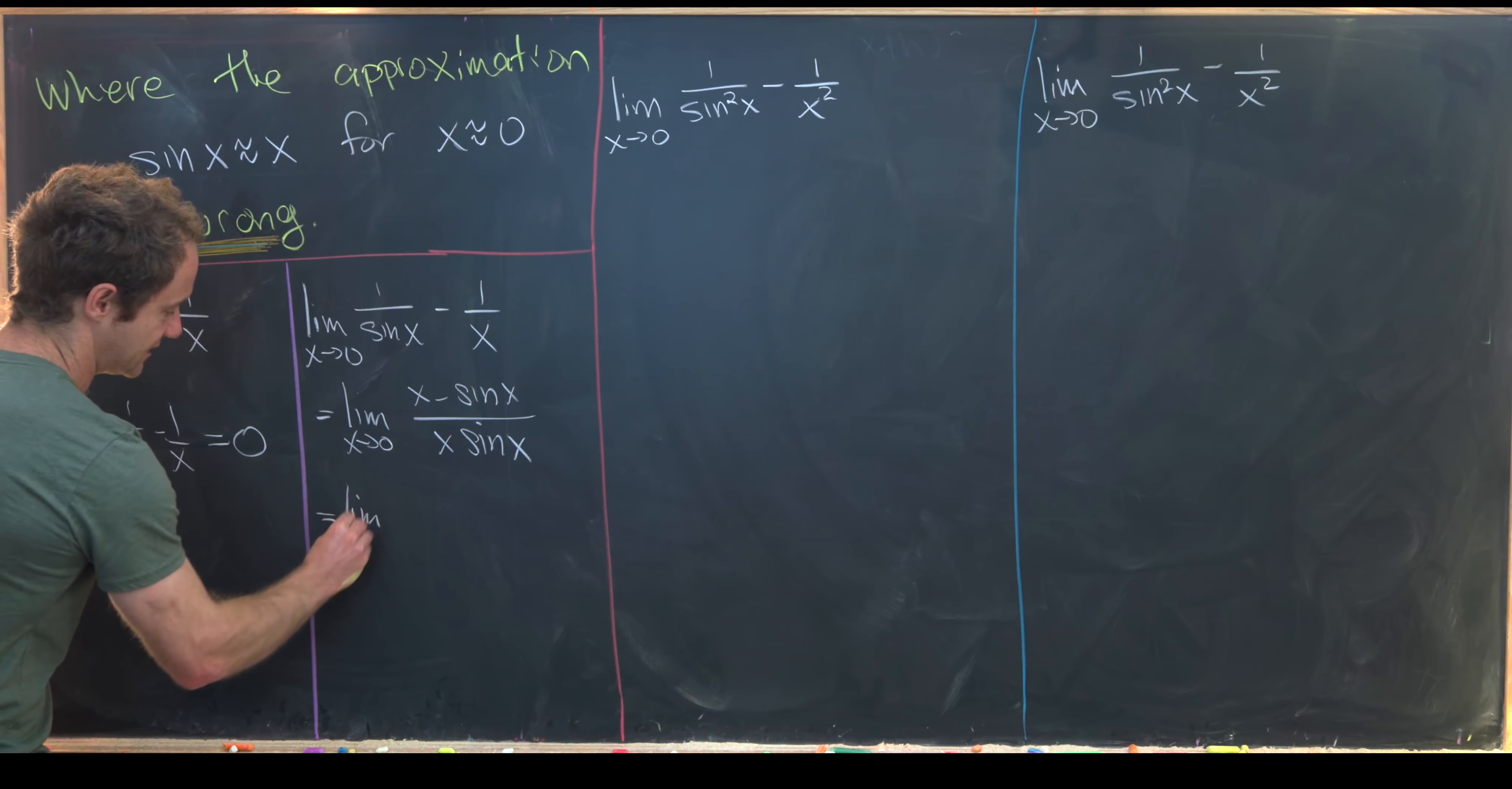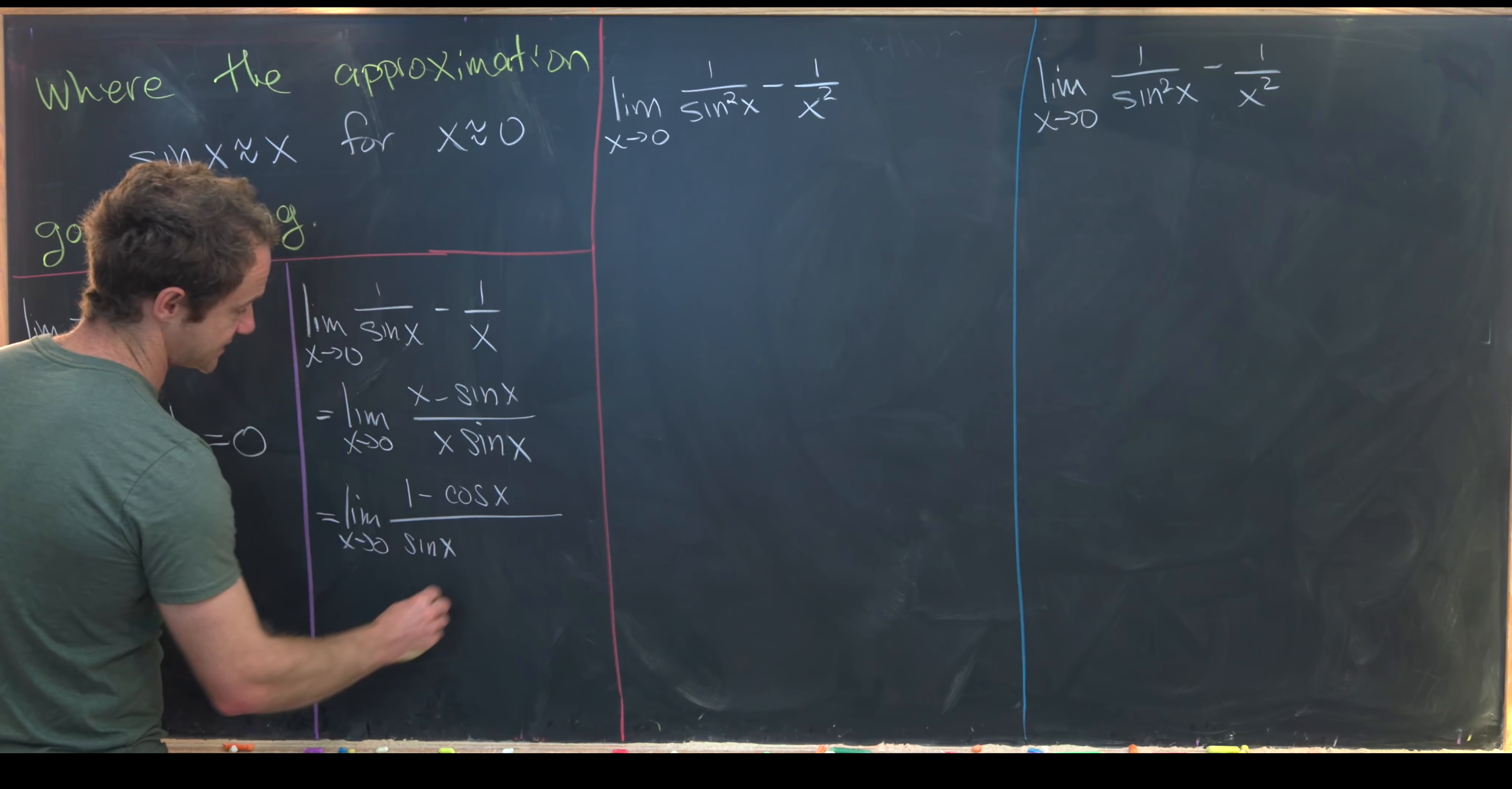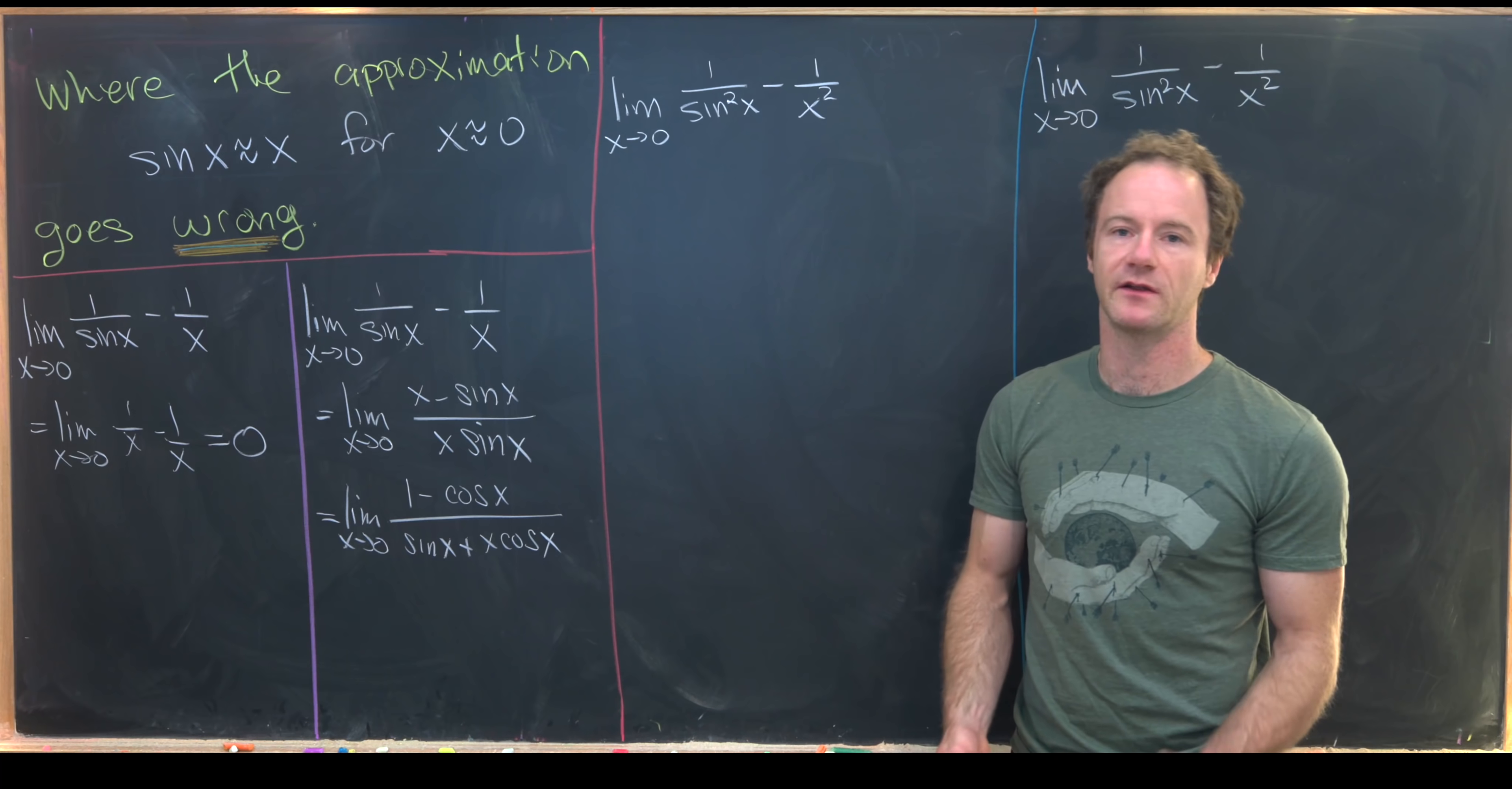So this is going to give us the limit as x goes to zero of one minus cosine of x over sine of x plus x times cosine of x. Again, I just took the derivative of the numerator and the denominator. That's L'Hopital's rule.